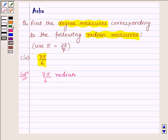And since π radian is equal to 180 degrees, this implies 1 radian is equal to 180 degrees upon π. And therefore,